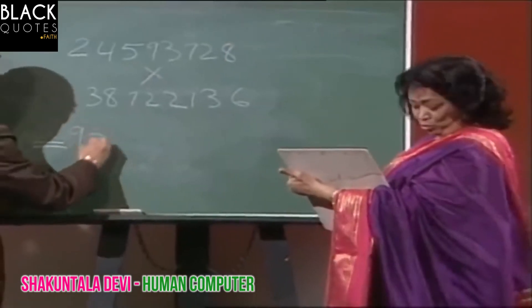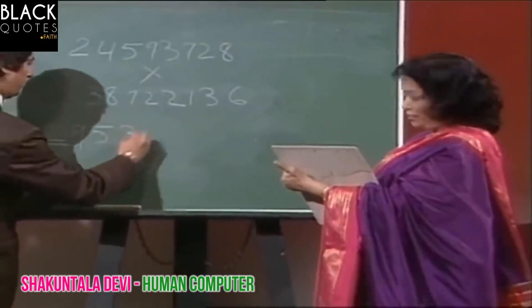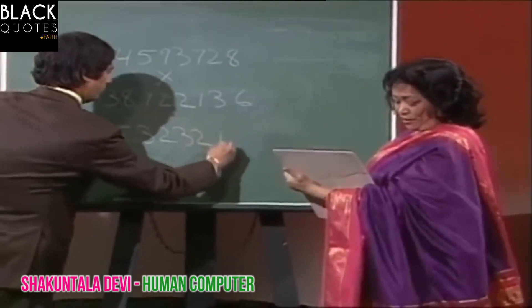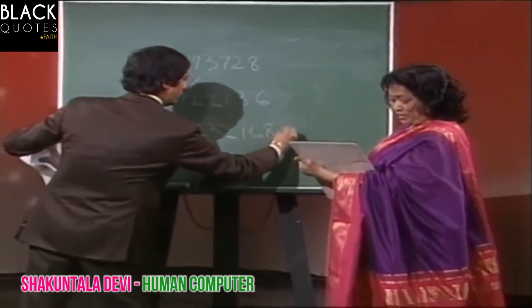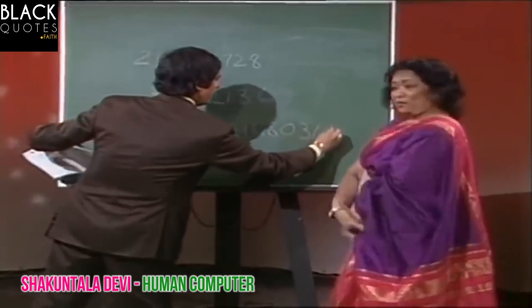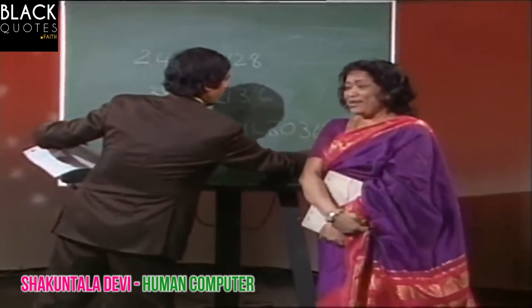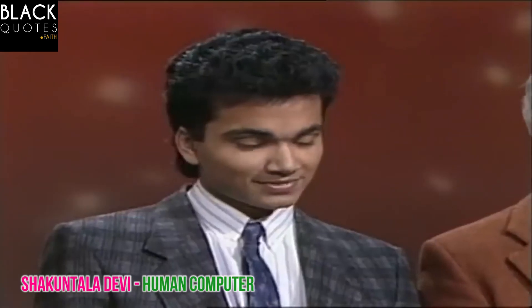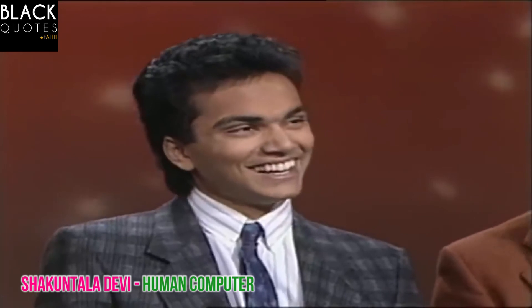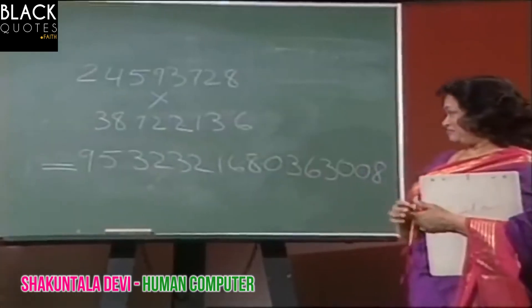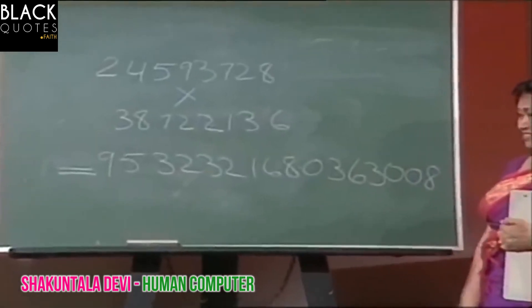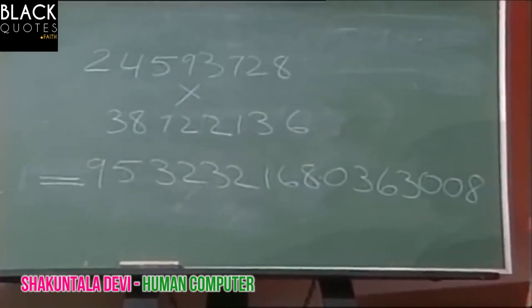9, 5, 2, 3, 2, 1, 6, 8, 0, 3, 6, 3, 0, 0, 8. I wouldn't believe it if that was right — it's exactly correct! Absolutely correct. I can't believe that. Are you sure not even one digit is wrong? It's perfectly correct, perfectly correct.